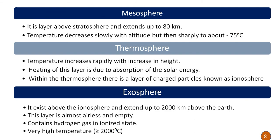Above the thermosphere is the last layer, the exosphere. It exists above the ionosphere and extends up to a height of 2000 kilometers above the earth's surface. This layer is almost airless and empty, and contains hydrogen gas in an ionized state, which is why temperatures reach approximately 2000 degrees Celsius. These are the different layers or zones of the atmosphere.